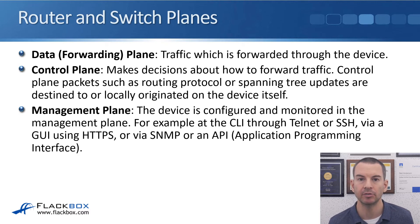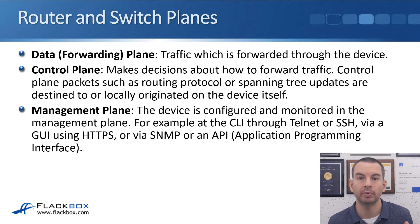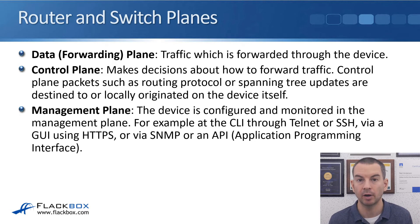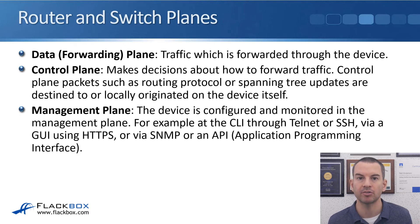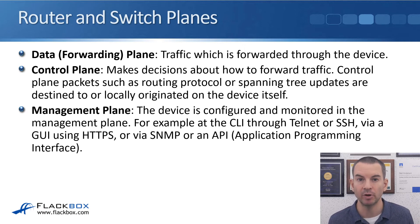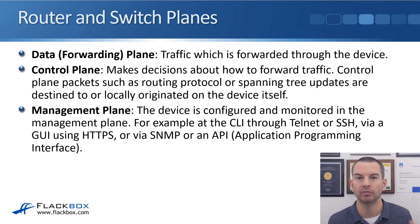The next plane is the control plane. The control plane makes decisions about how to forward traffic. Control plane packets such as routing protocol updates at layer 3 or spanning tree updates at layer 2 are destined to or locally originated on the device itself. For example, if we've got routers R1 and R2 sharing OSPF updates, when R1 advertises a route to R2, that packet originates on R1 and is destined to R2. Unlike packets in the data plane which pass through the router, packets in the control plane originate from and terminate on the routers or switches.